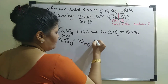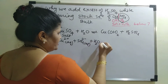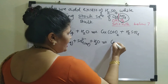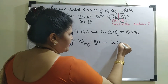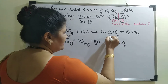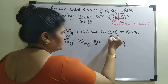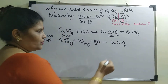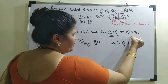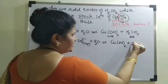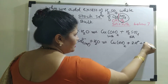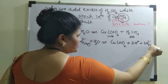Water always remains as it is, being a weak electrolyte. Copper hydroxide is a weak base and so it will remain as it is — it will not undergo any dissociation. H₂SO₄, being a strong acid, will give 2H⁺ and SO₄²⁻.